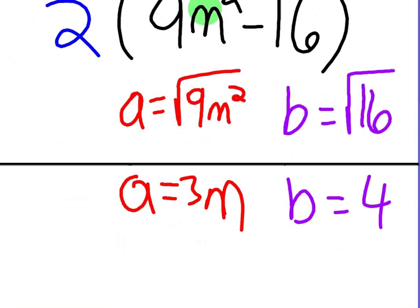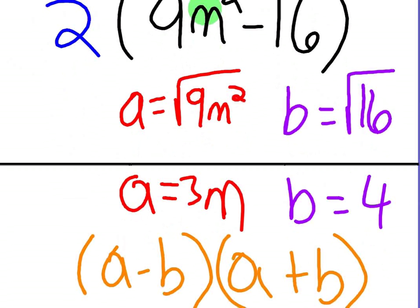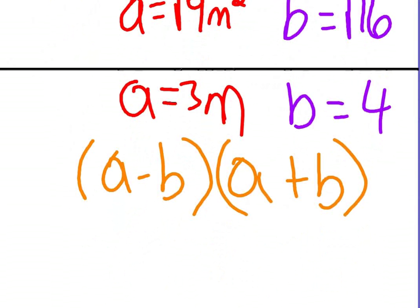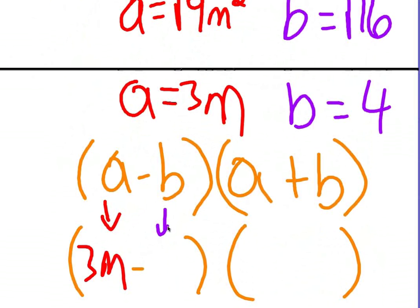Then you are going to write out the formula for the difference of squares, which is A minus B, A plus B. Doesn't matter which way you write it out. The plus or the minus can come either way. And then you are just going to simply plug in what you figured out for A and B. So for A, I am plugging in 3M. And yes, it is always going to be minus and plus. And again, it does not matter which order. And then for B, I am plugging in 4.